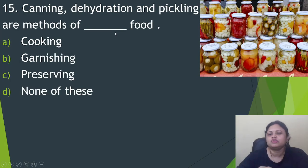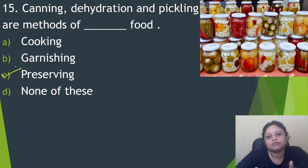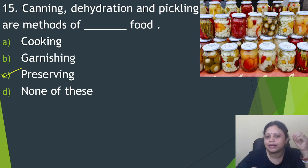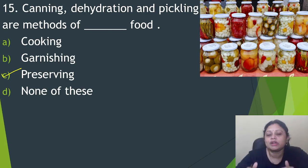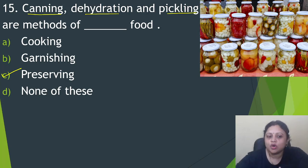Now coming to the last question of today's session: canning, dehydration, and pickling are methods of doing what to food? Option A, cooking. B, garnishing. C, preserving. D, none of these. Canning, dehydration, and pickling are methods of preserving food. When we leave food for a long time, microorganisms — which we cannot see with the naked eye — attack the food and spoil it. We do not want food to spoil, so we preserve it using methods like canning, dehydration, and pickling. The correct answer is option C, preserving.